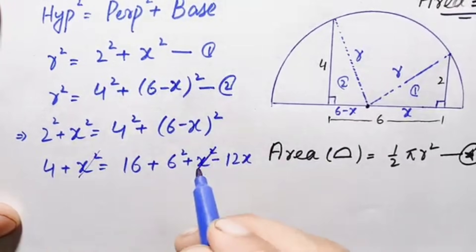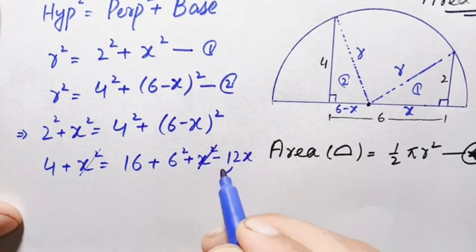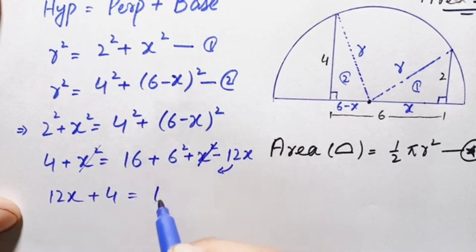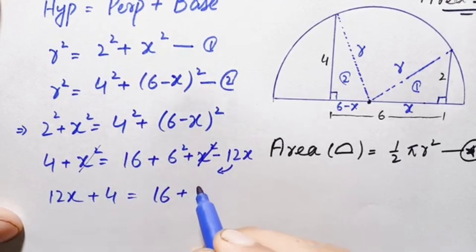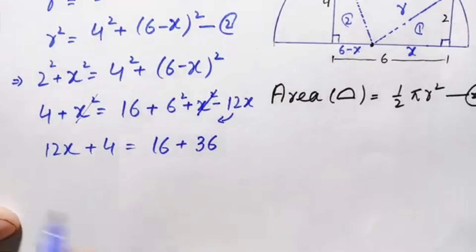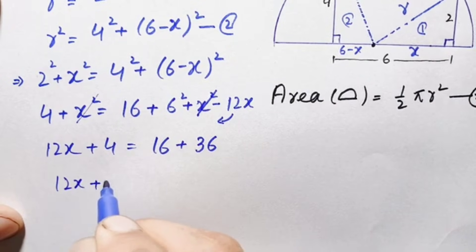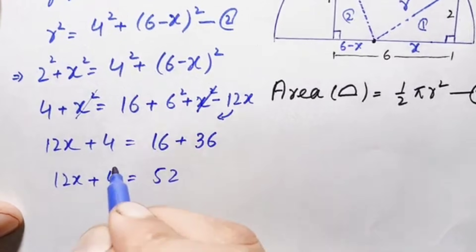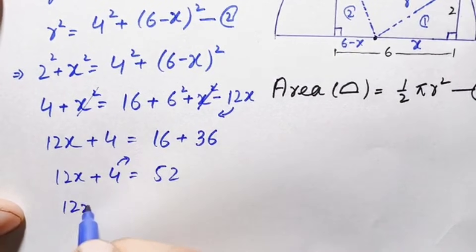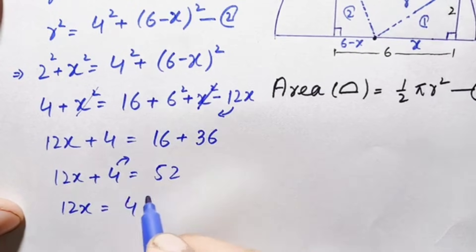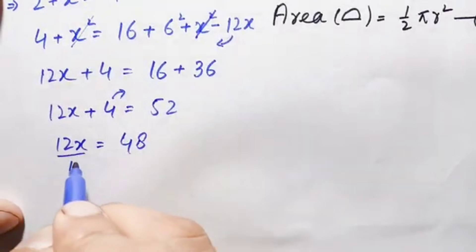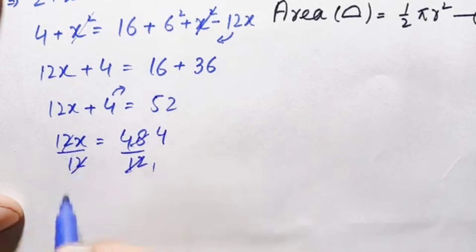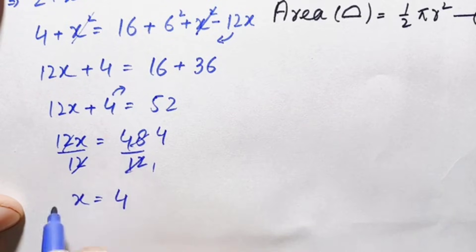The x² terms cancel from both sides. Moving −12x to the left gives 12x + 4 = 16 + 36 = 52. Therefore 12x = 52 − 4 = 48. Dividing both sides by 12 gives x = 4 units.